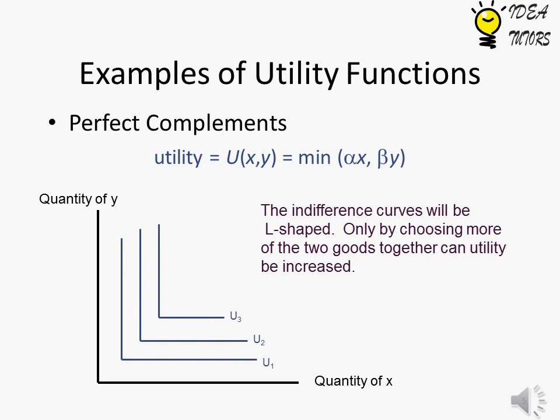Perfect Complements. These goods are used together with one another, for example car and petrol are complementary goods. The utility function is given by minimum of alpha x, beta y. This means that the total utility is equal to the minimum amount of good available.